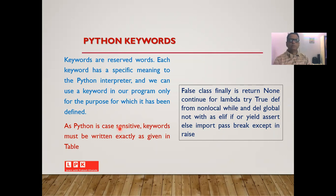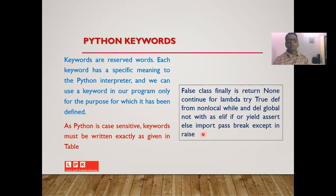Python is a case-sensitive language, and therefore whenever we want to make use of keywords we need to use them exactly as given in the table. Keywords available in Python include: False, class, finally, is, return, None, continue, for, lambda, try, True, def, from, nonlocal, while, and, del, global, not, with, as. For False, 'F' is capital; for None, 'N' is capital.